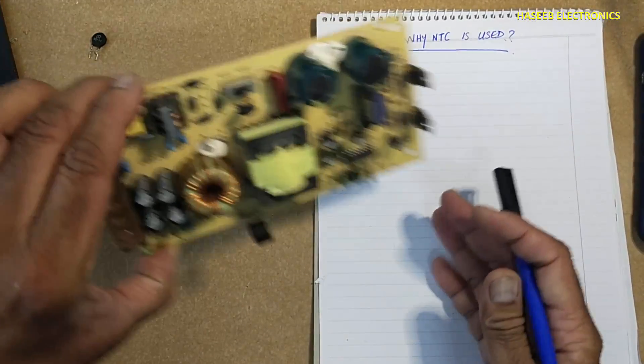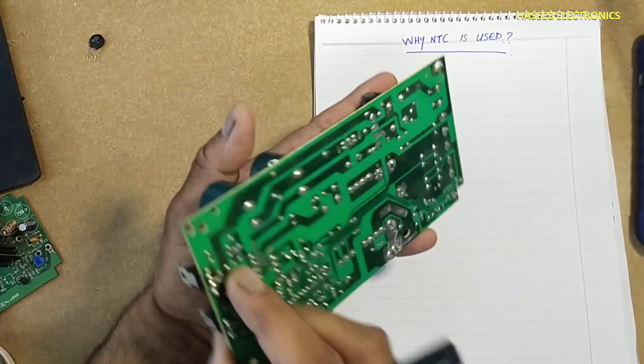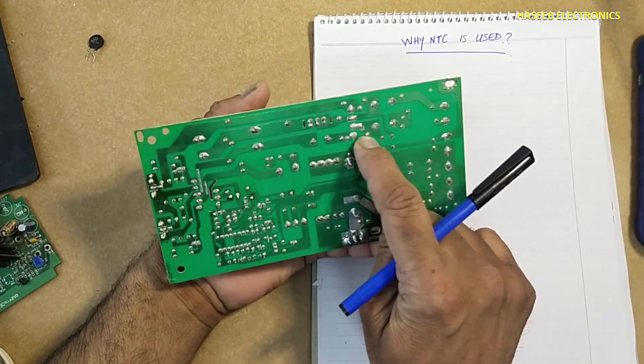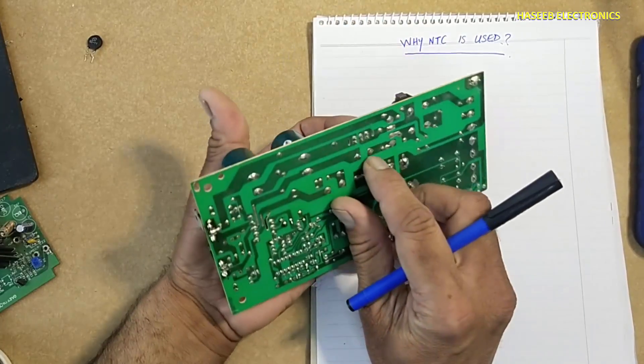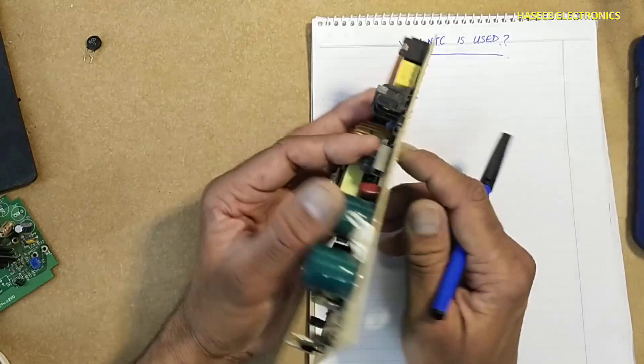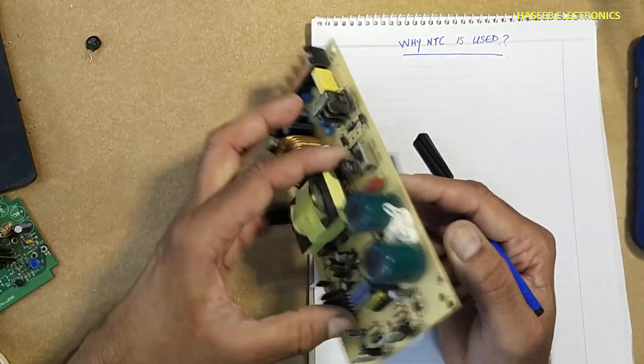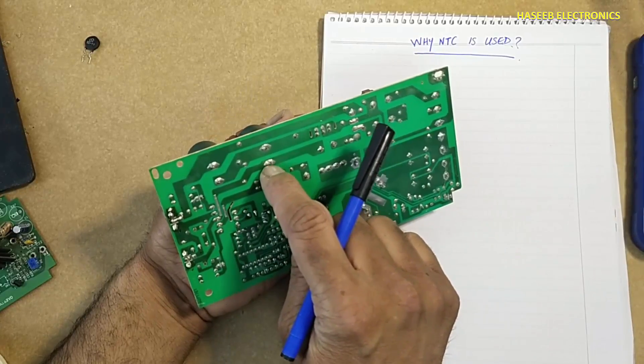If we look at the circuit, AC in, bridge rectifier. After bridge rectifier, this NTC is connected here at this point. This is the negative terminal of this bridge rectifier, then it is reaching to capacitor, this point.